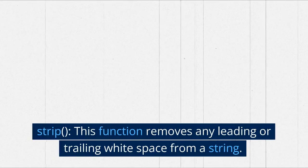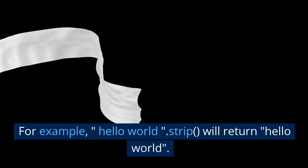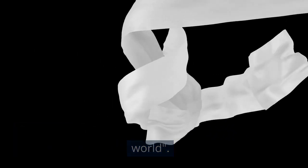strip() - This function removes any leading or trailing white space from a string. For example, " Hello, World! ".strip() will return Hello, World!